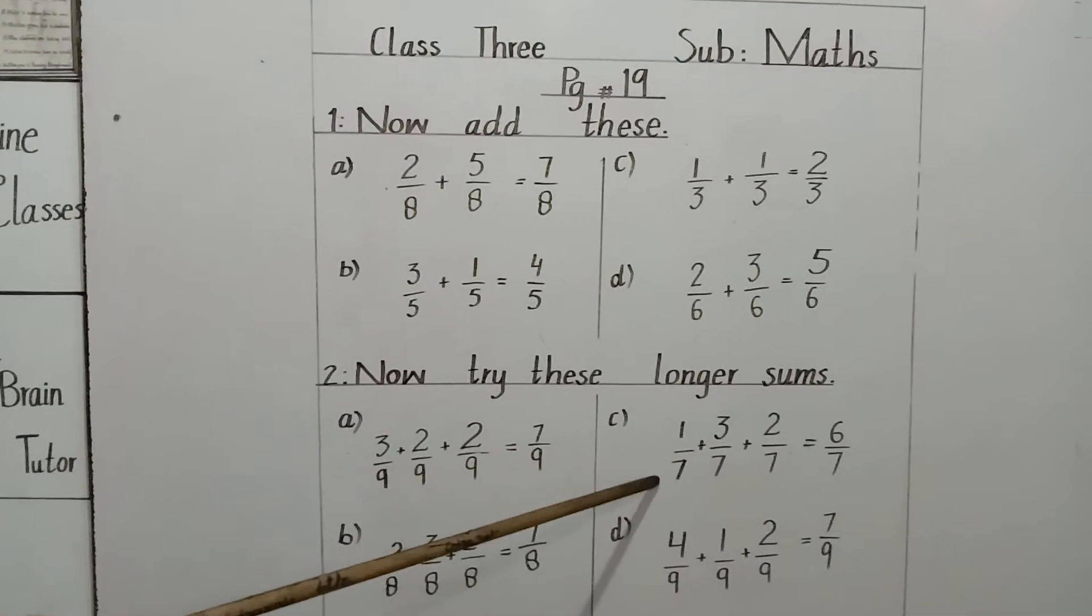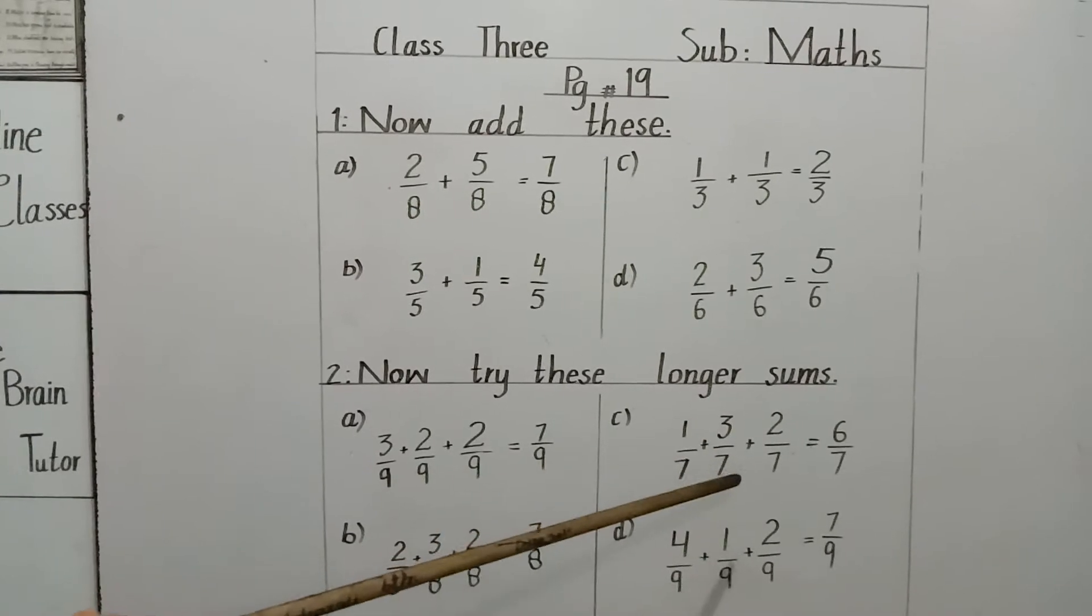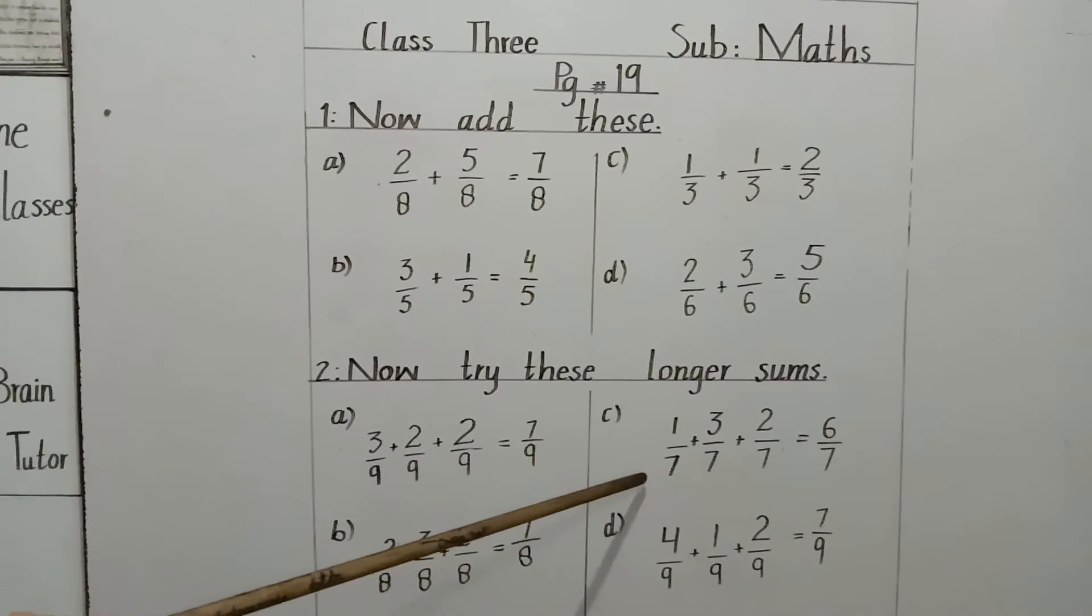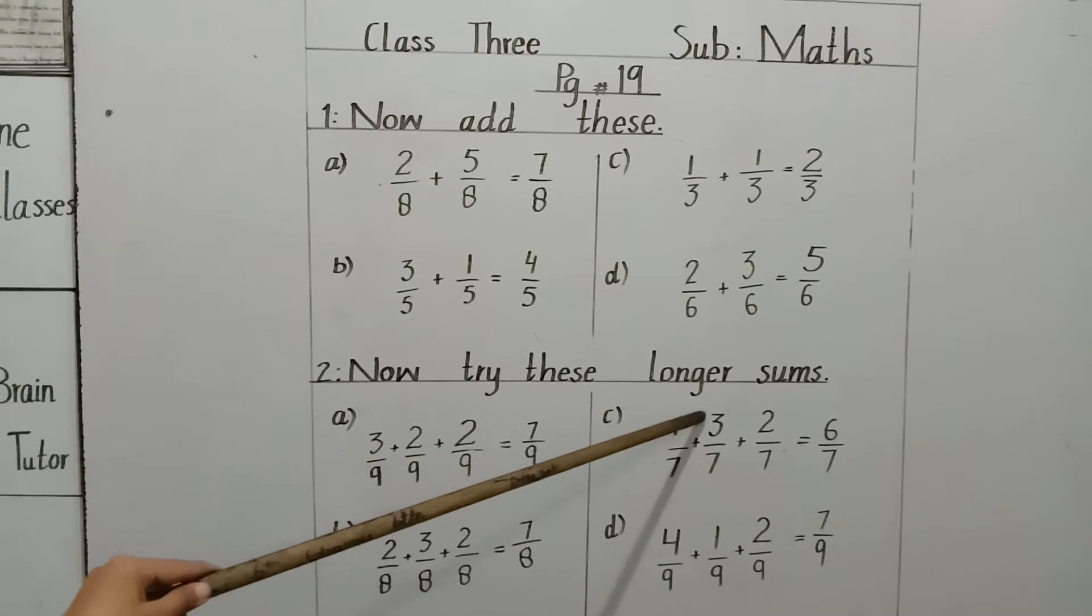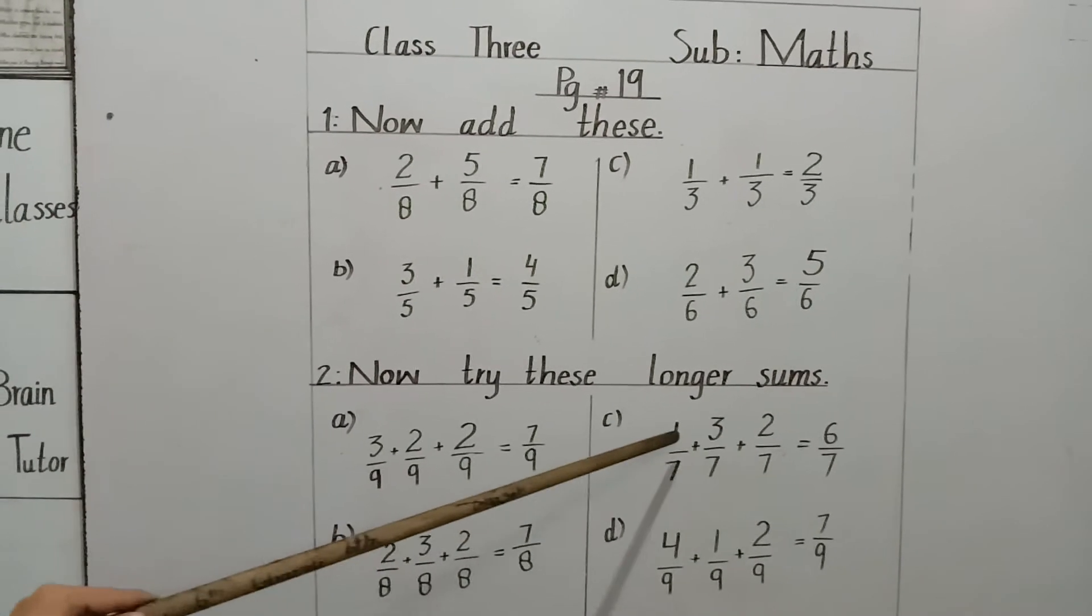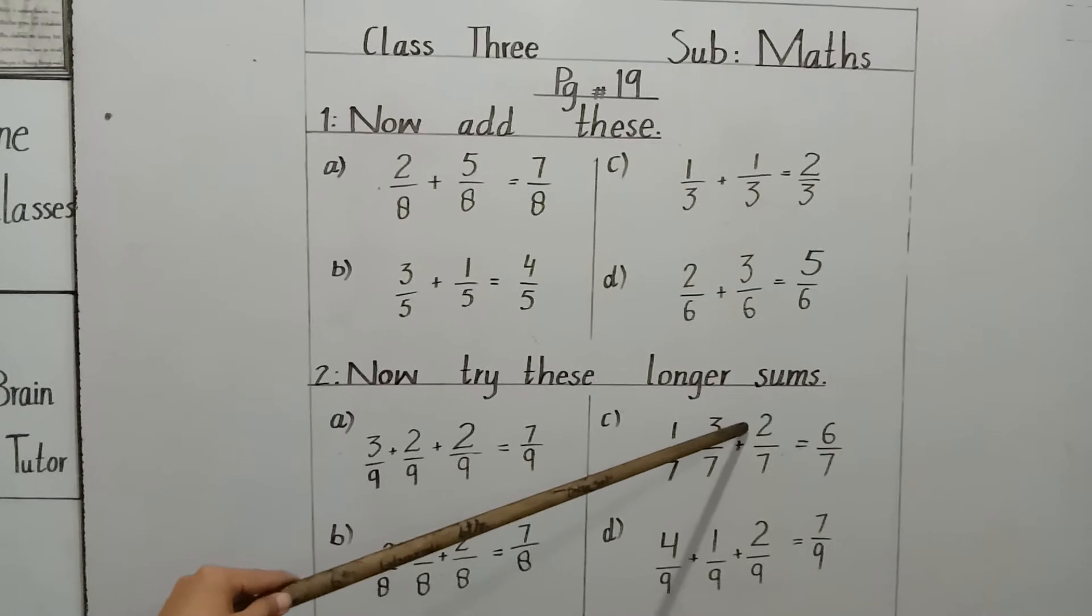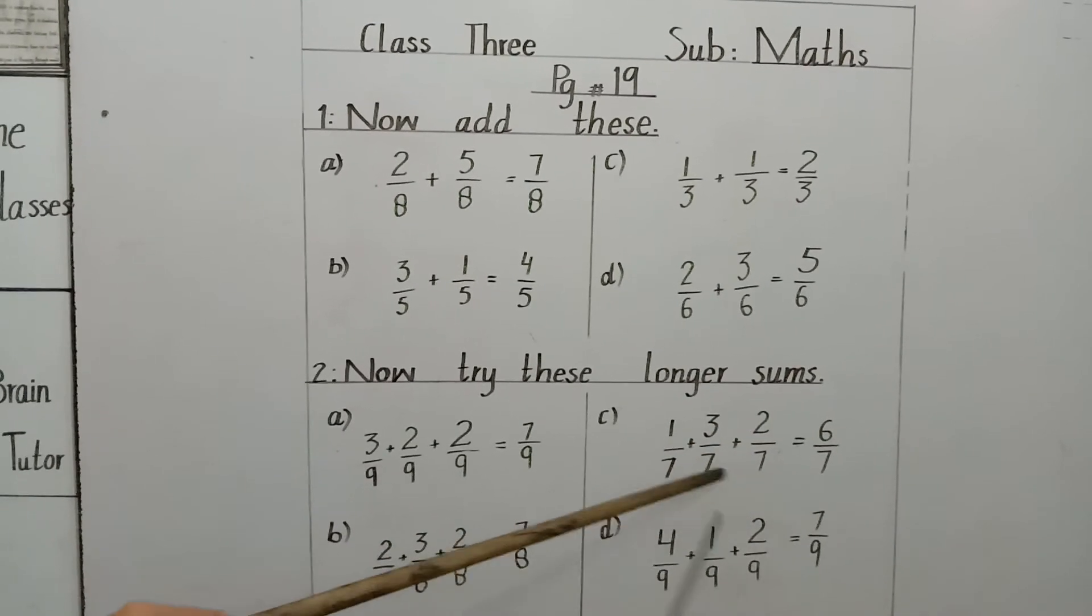These also 1 by 7 plus 3 by 7 plus 2 by 7. This is 7. These all are same. So we have written here 7. 1 plus 3 equals 4. 4 plus 2 equals 6. 6 by 7 is the answer.